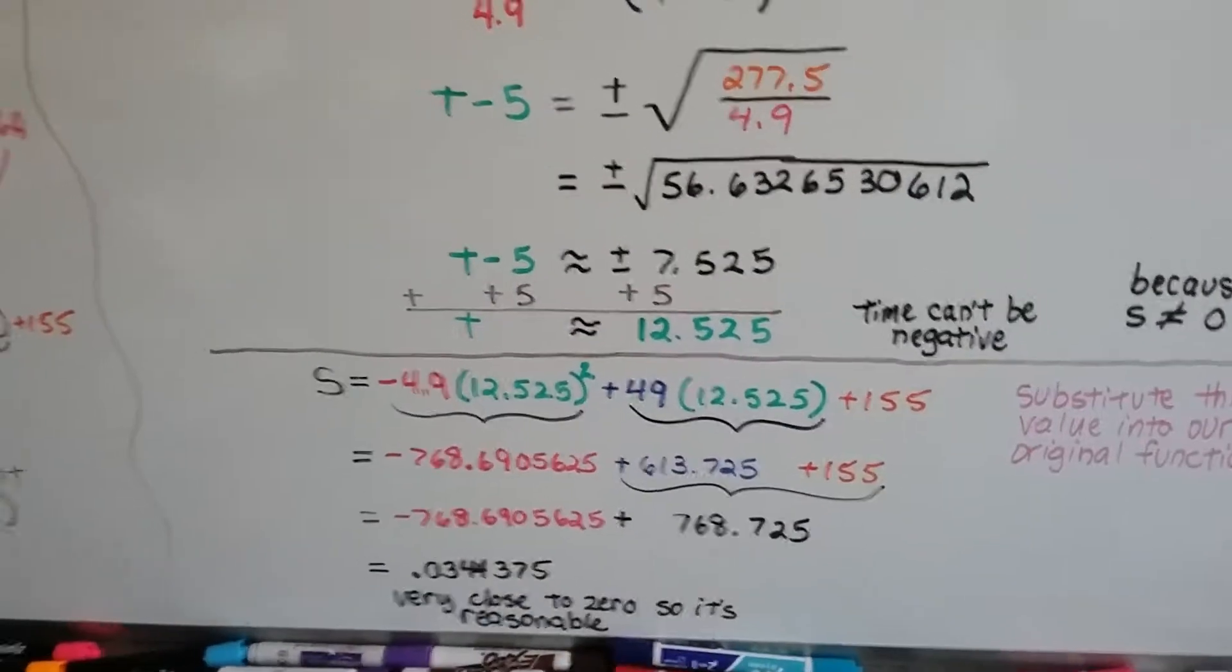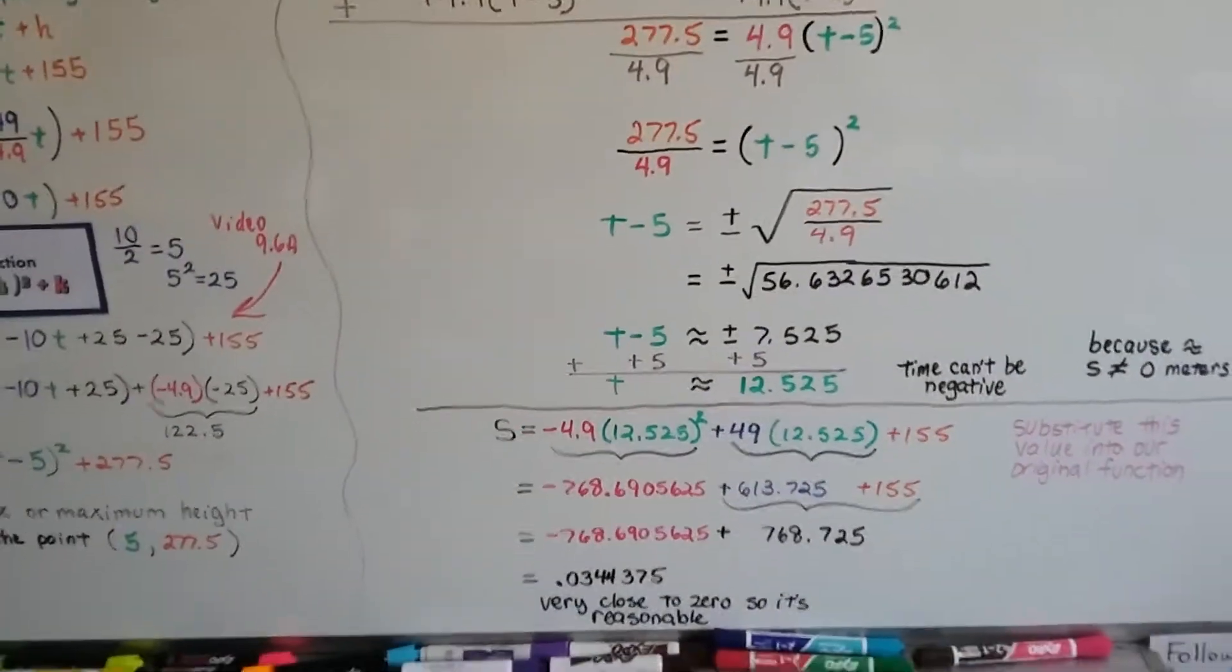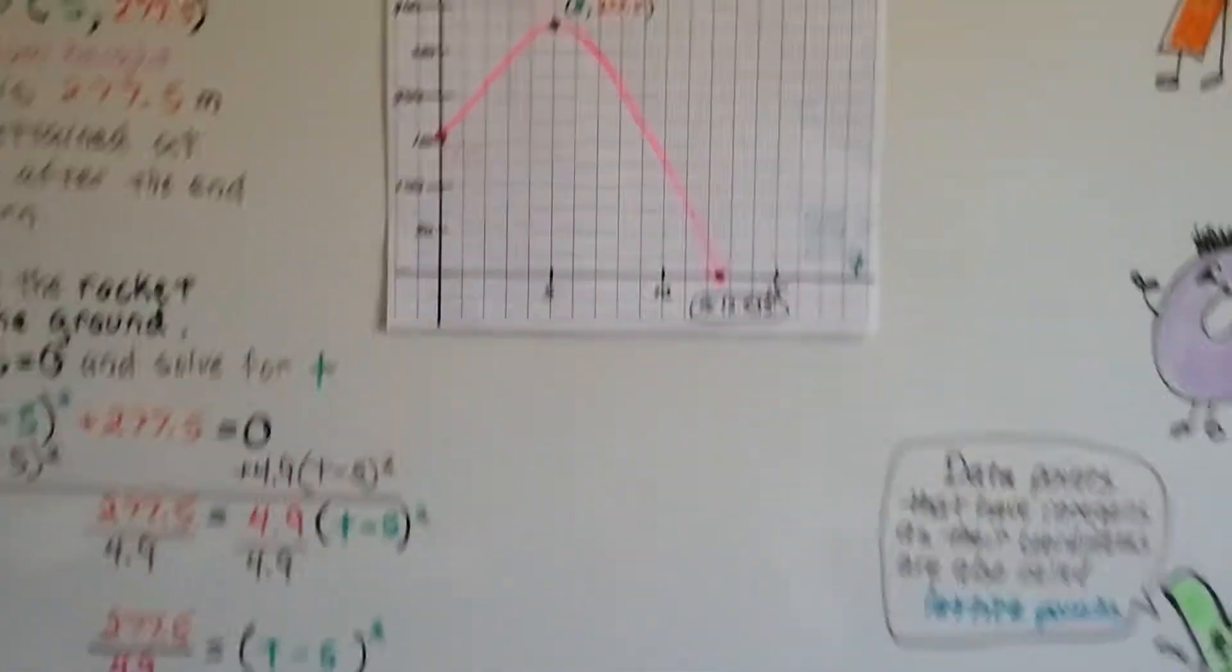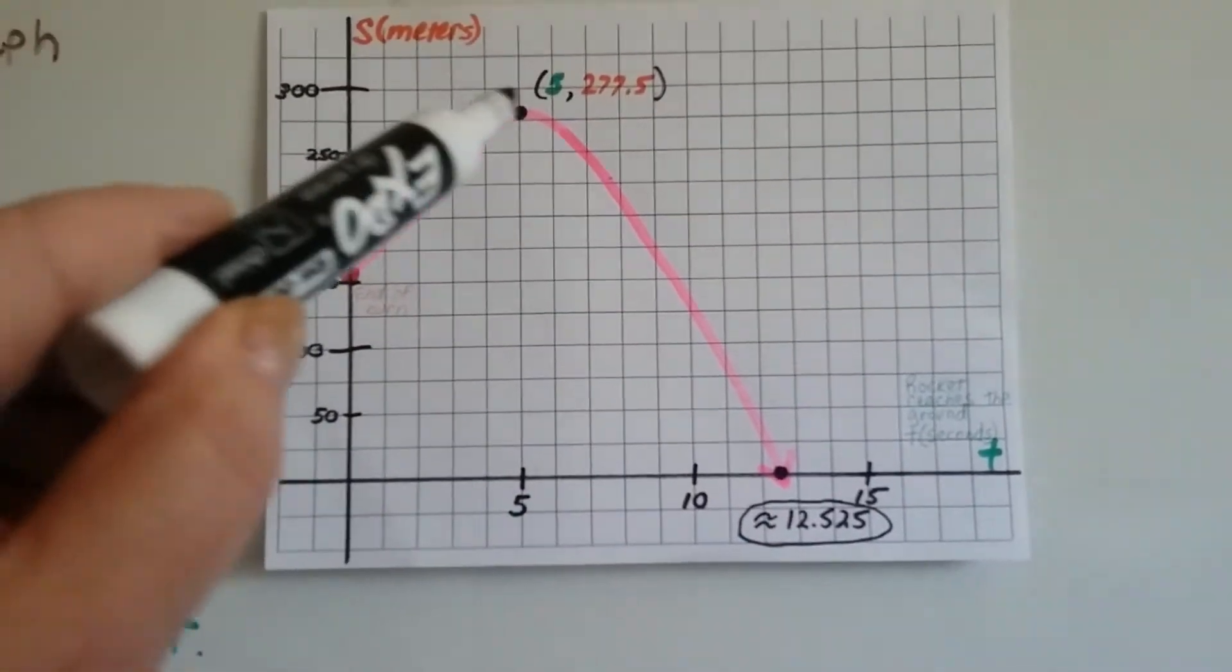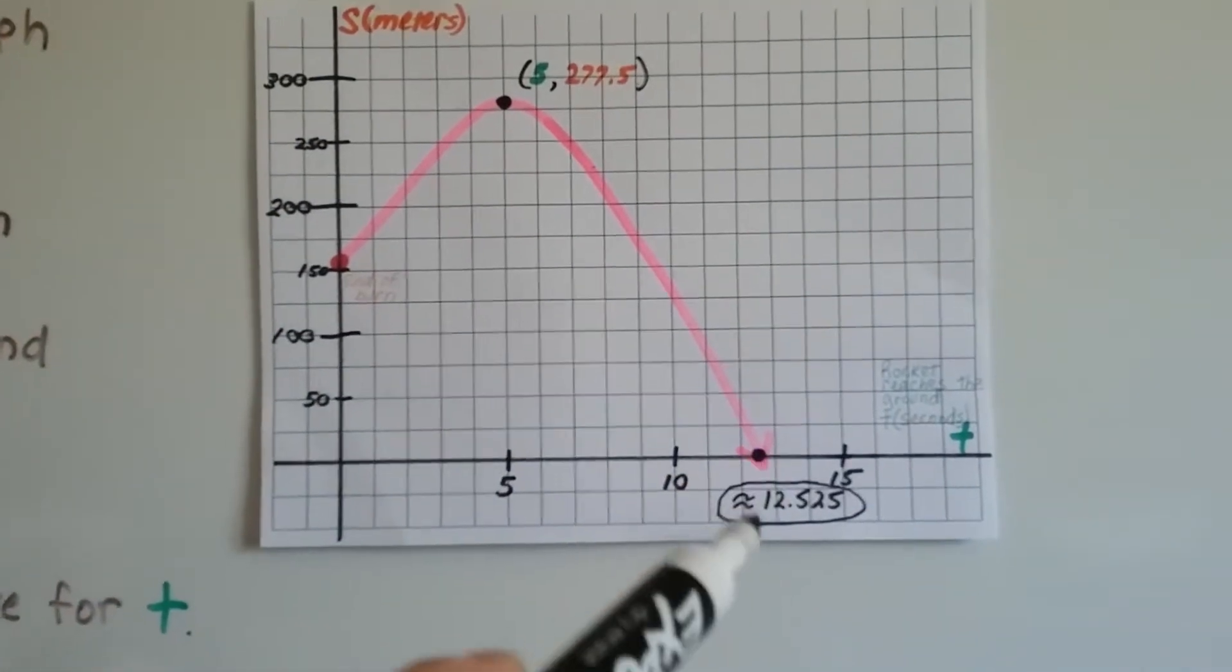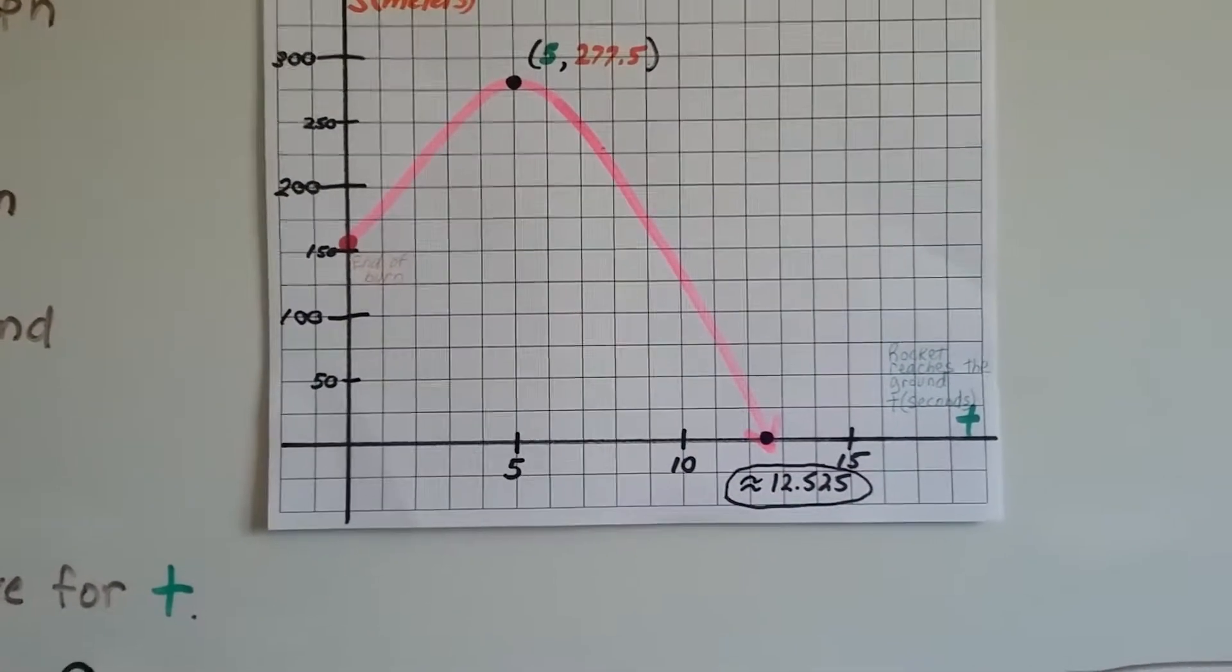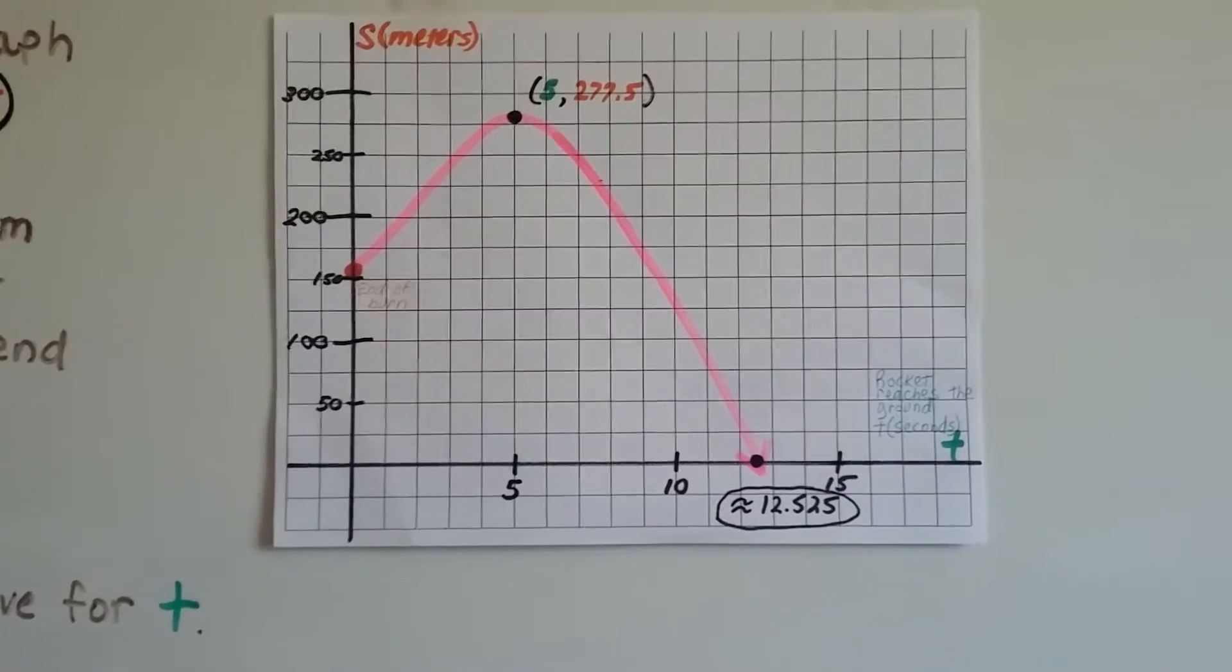That's how we found when the rocket reached the ground. We checked it. It's reasonable. And we see that our parabola went down and the rocket hit the ground at approximately 12.525 seconds.